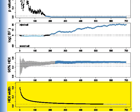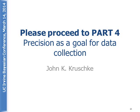At the bottom, we see the width of the HDI getting smaller and smaller until eventually it would drop below the desired precision. Please proceed now to Part 4.